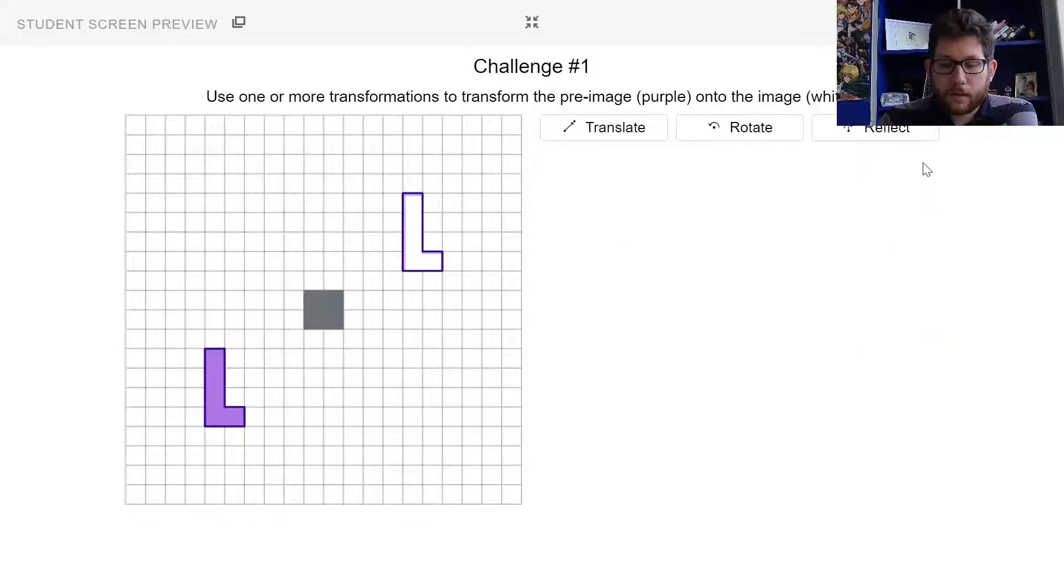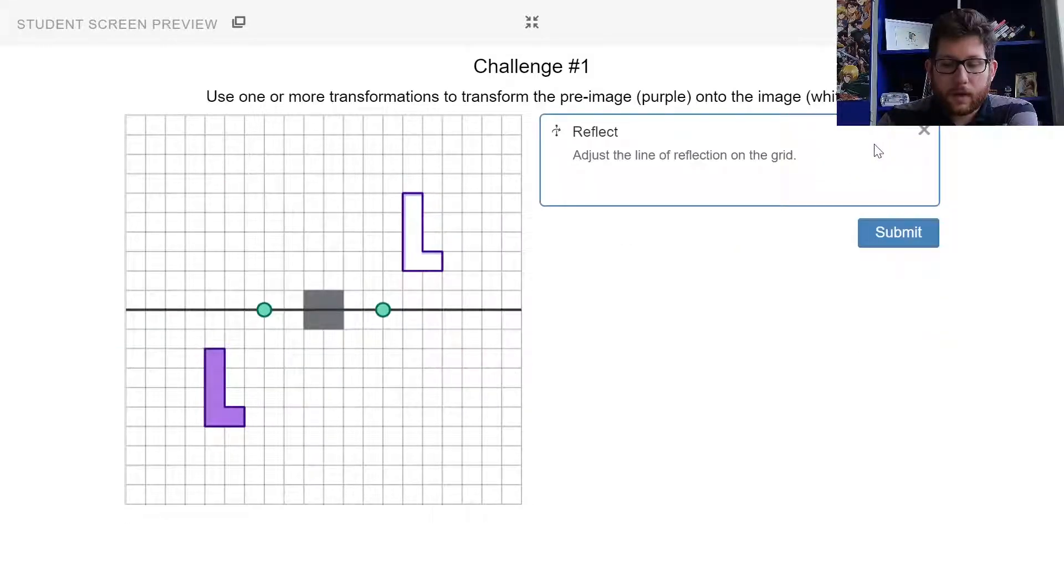Okay, now let me show you one other thing here. Now let's say I did a reflection, and let's say I reflected it this way. I could do something like this. Actually let me make this a little bit of a nicer reflection. There we go. I can reflect.